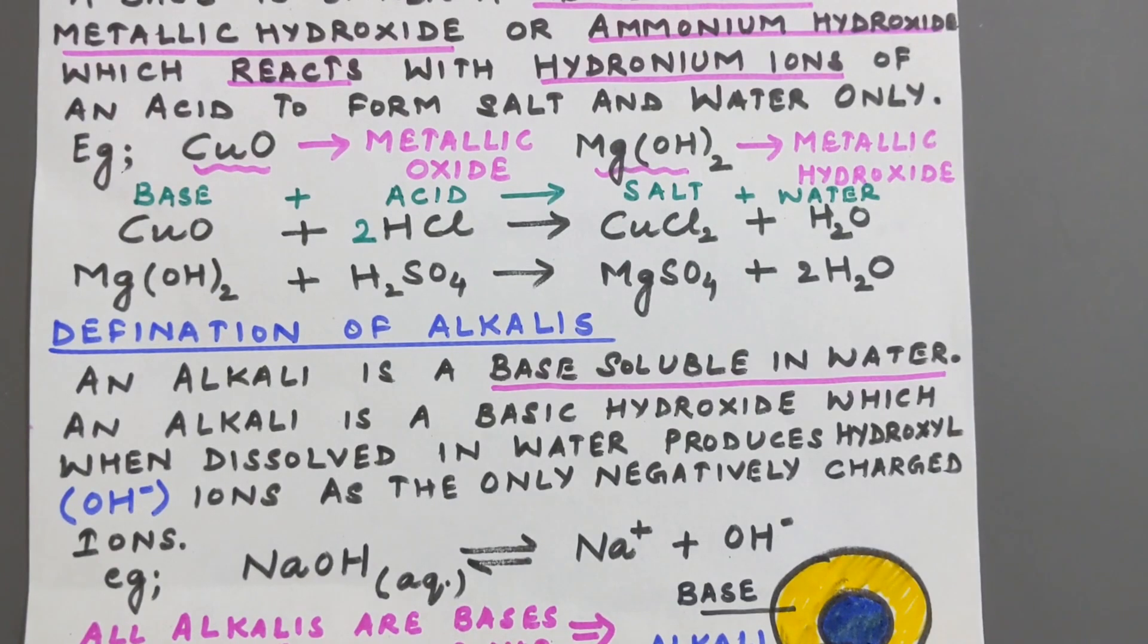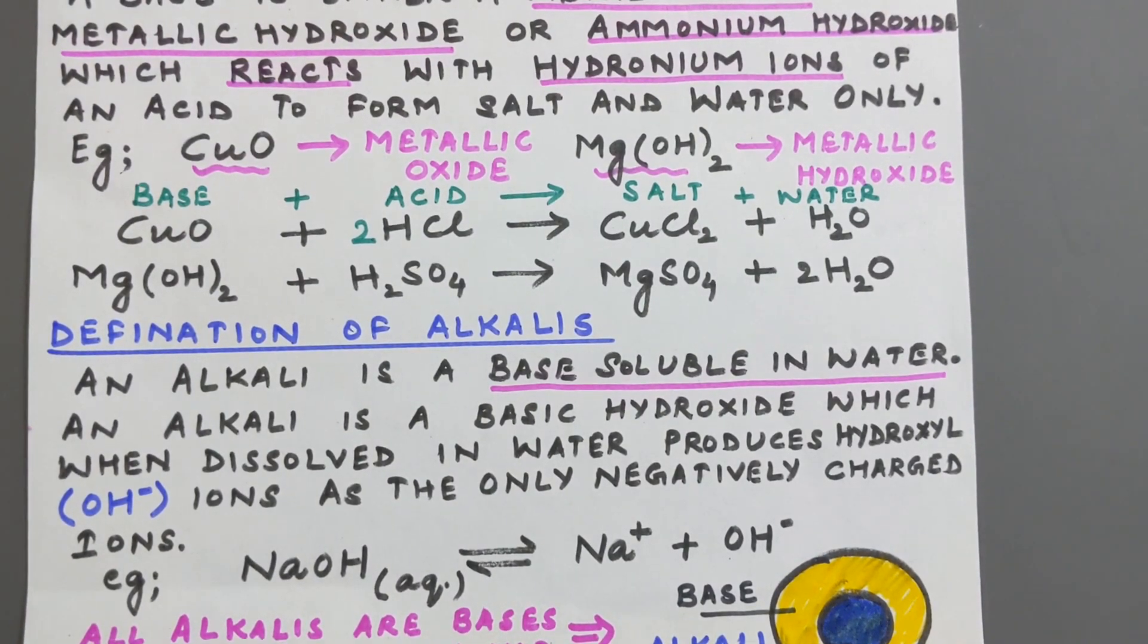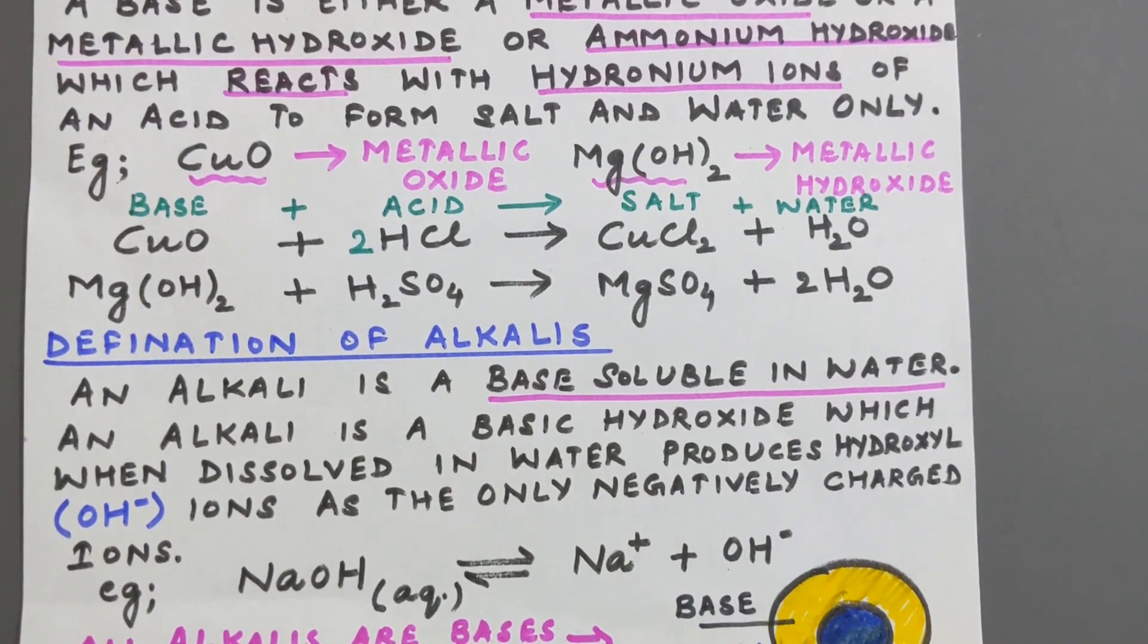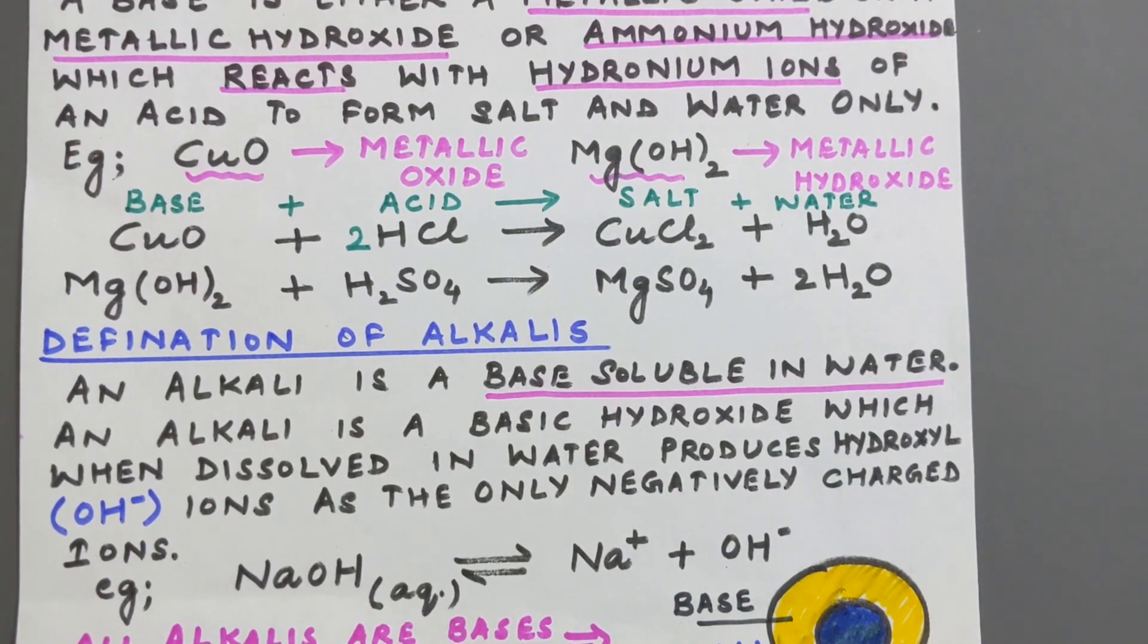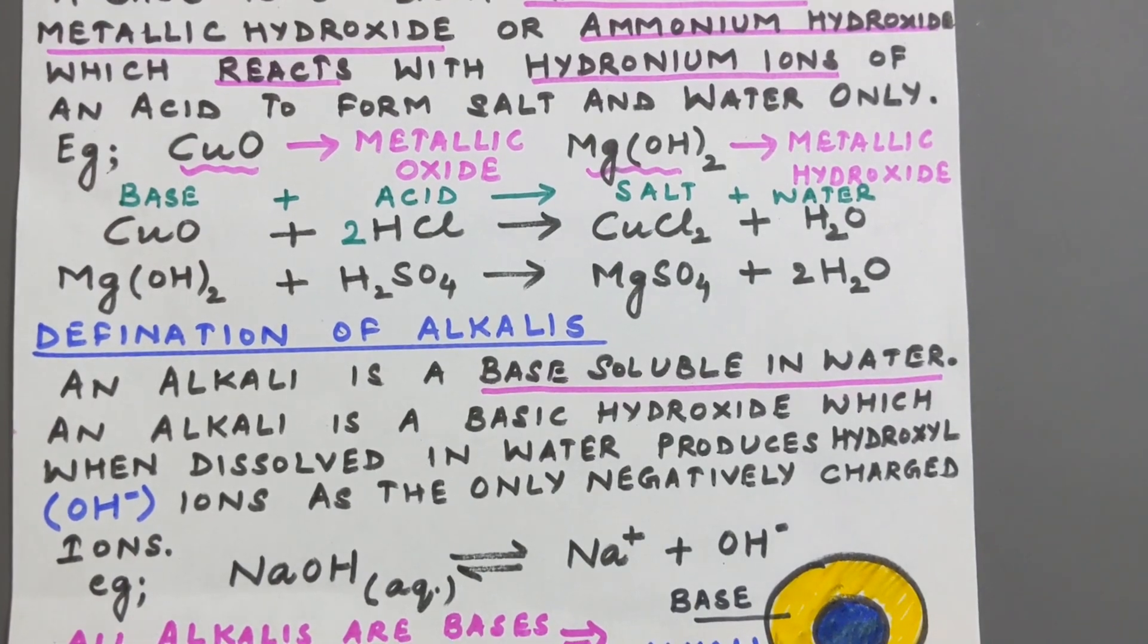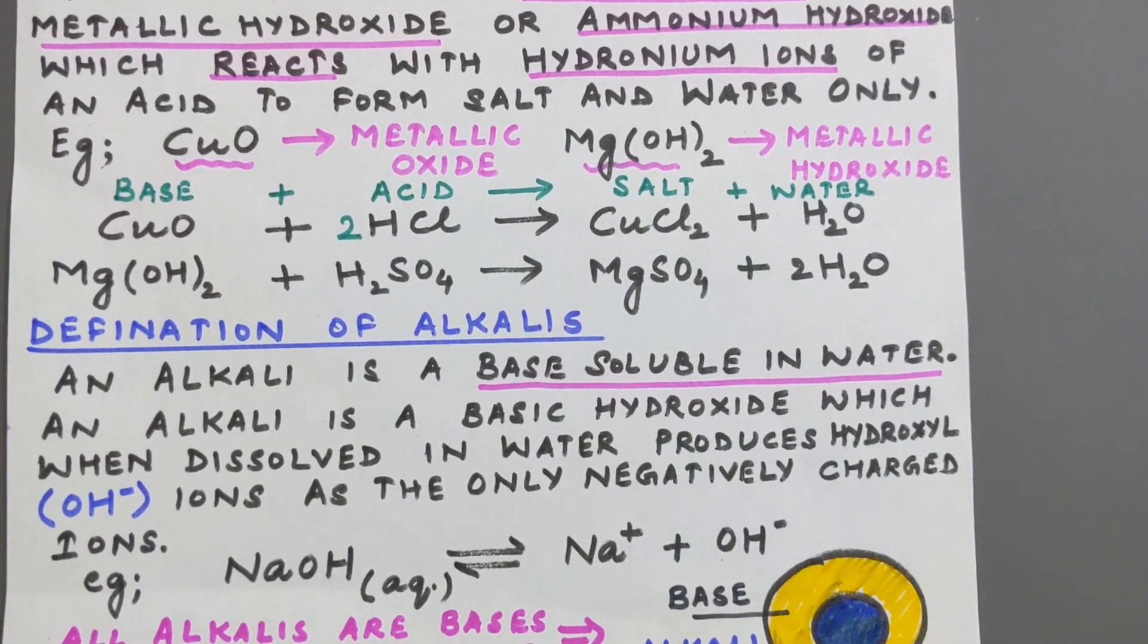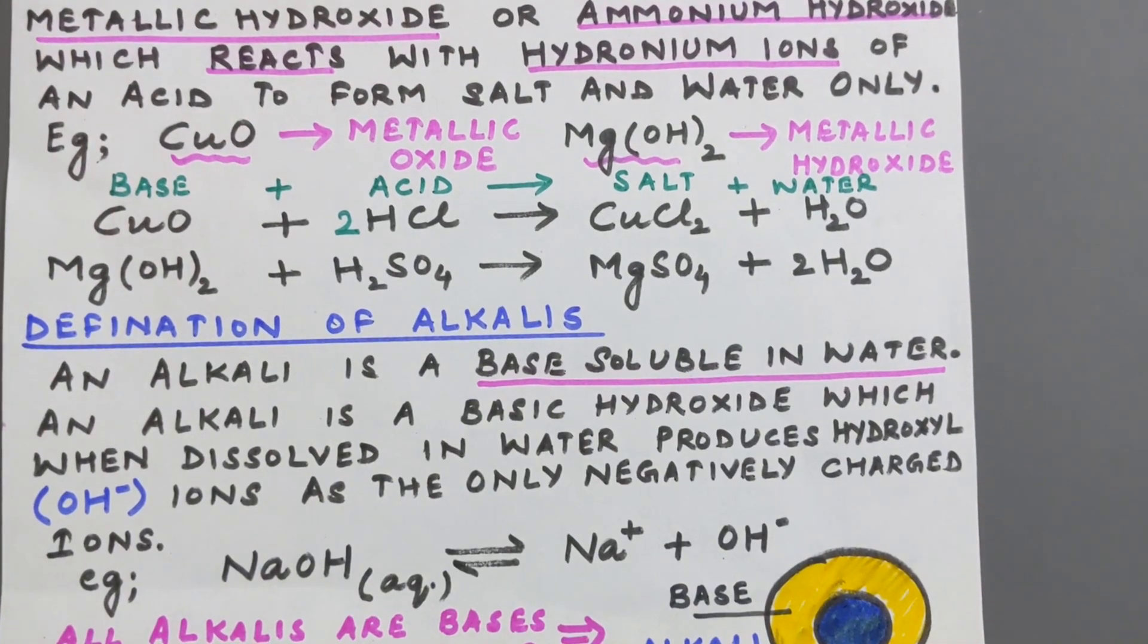So now you have understood the examples of metallic oxides and hydroxides. So let us write an equation to understand what is a base. Copper oxide CuO when it is made to react with HCl which is an acid, it is producing salt and water.